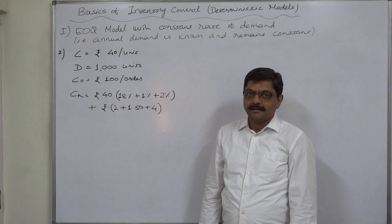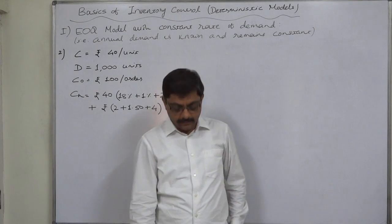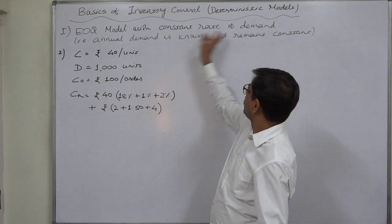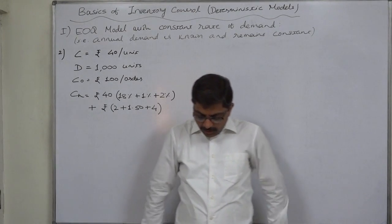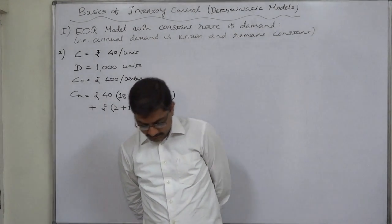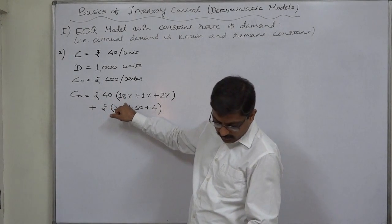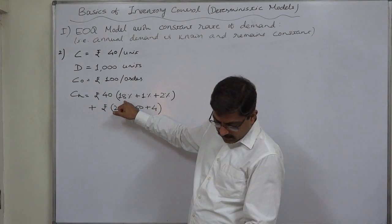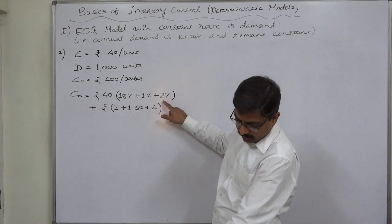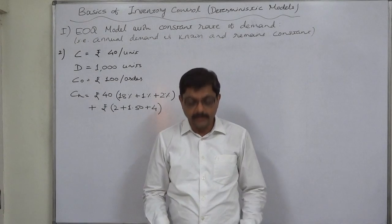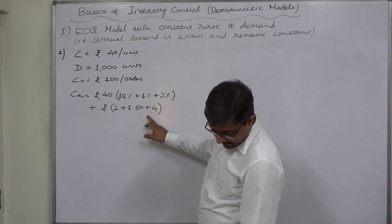Hello friends, welcome again. Now let us take a case where some description about the cost of holding or carrying cost is available. The main point is the same EOQ model with constant rate of demand. The case is: each unit of an item costs a company rupees 40. Annual holding costs are 18% of unit cost for interest charges, 1% for insurance, and 2% for obsolescence, rupees 2 for building overheads.